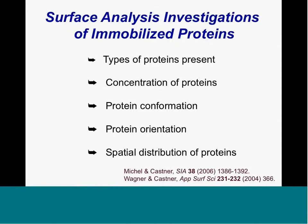There's been a lot of work both in our group and others around the world to show that you can use SIMS amino acid fragmentation patterns—usually coupled with multivariate analysis—to identify what types of proteins are present on the surface, what's their concentration, what's their conformation and orientation, and spatial distribution. Several key papers in this field are summarized in the review references.